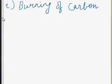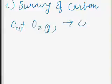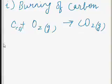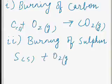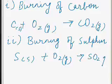First, burning of carbon: carbon burns in the presence of oxygen to form CO2 gas. This is an oxidation reaction since oxygen is added to carbon. Our second example is burning of sulfur: sulfur burns in the presence of oxygen to form sulfur dioxide gas. Oxygen is also added here, so this is an oxidation reaction.